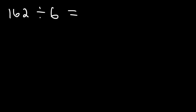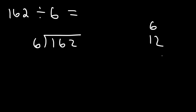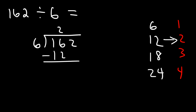Let's try another example: divide 162 by 6. Feel free to pause the video and work on that. So let's begin — how many times does 6 go into 16? Making a list: 6, 12, 18, 24. Now 18 exceeds 16, so we stop at 12. 6 goes into 16 two times; 6 times 2 is 12, and 16 minus 12 is 4. Now we bring down the 2, and 6 goes into 42 exactly seven times — 6 times 7 is 42.